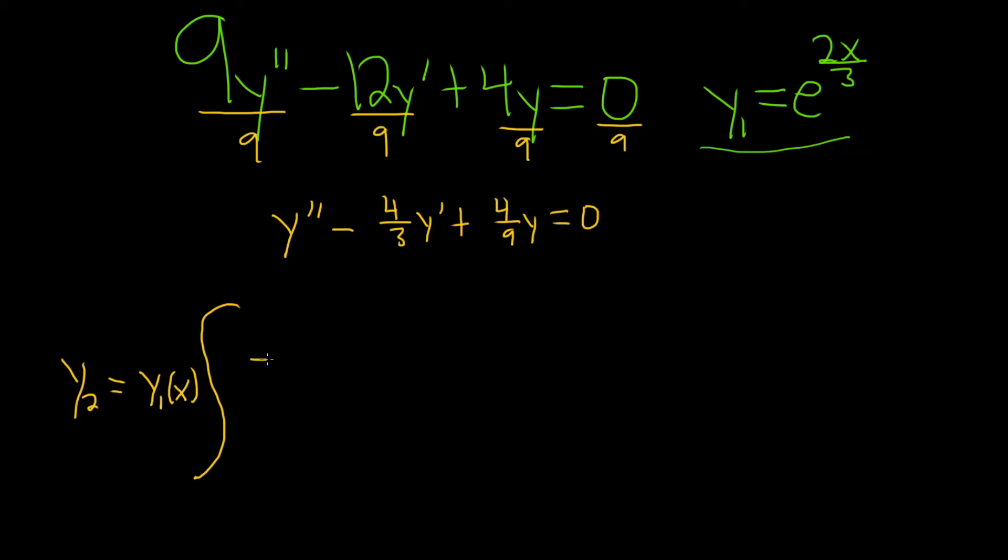Of e to the negative integral of big P of x dx. And it's all being divided by y sub 1 of x, and this thing is squared. And then we have our dx here.